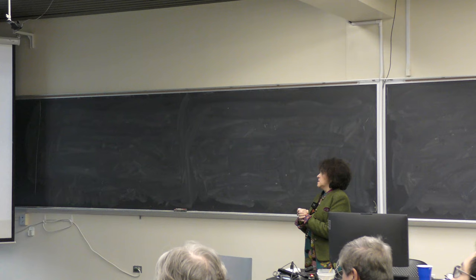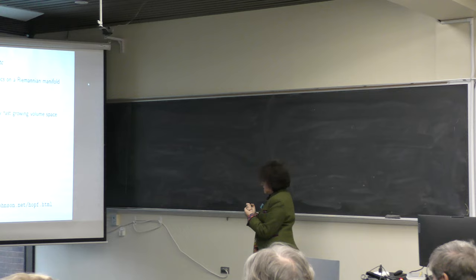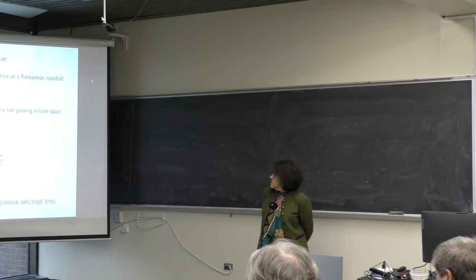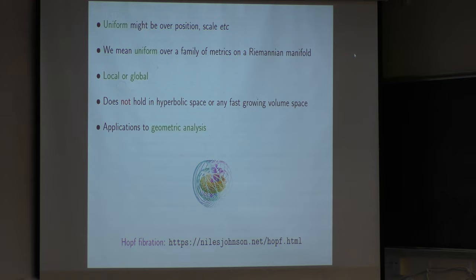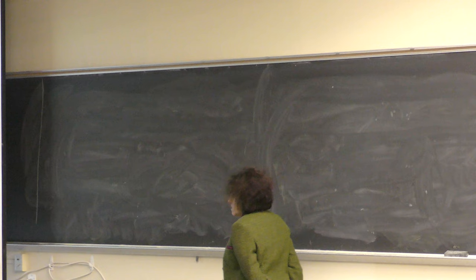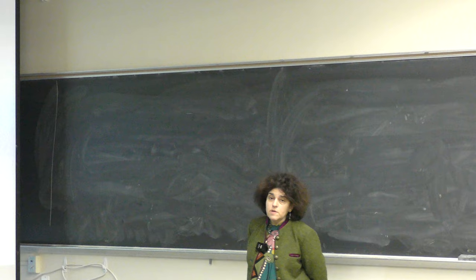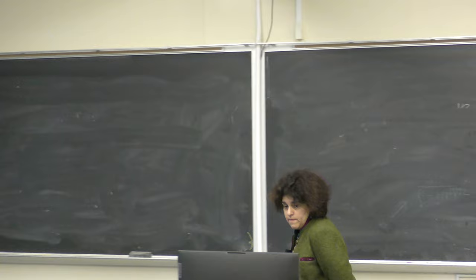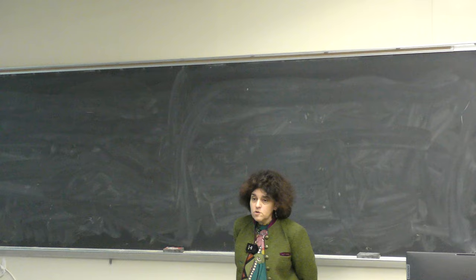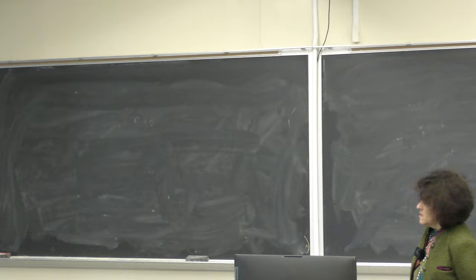What we will look at is a family of metrics on a Riemannian manifold, and we want to see if the doubling property is uniform over a huge family of left-invariant Riemannian metrics. This is not the property that doubling holds on any metric space — there are plenty of examples where you don't have this. What I will mention is applications to geometric analysis: Sobolev inequalities and things like that. The main group we will look at in this talk is SU(2), so 2×2 matrices, and we'll see that the Hopf fibration is hidden in some of the results.